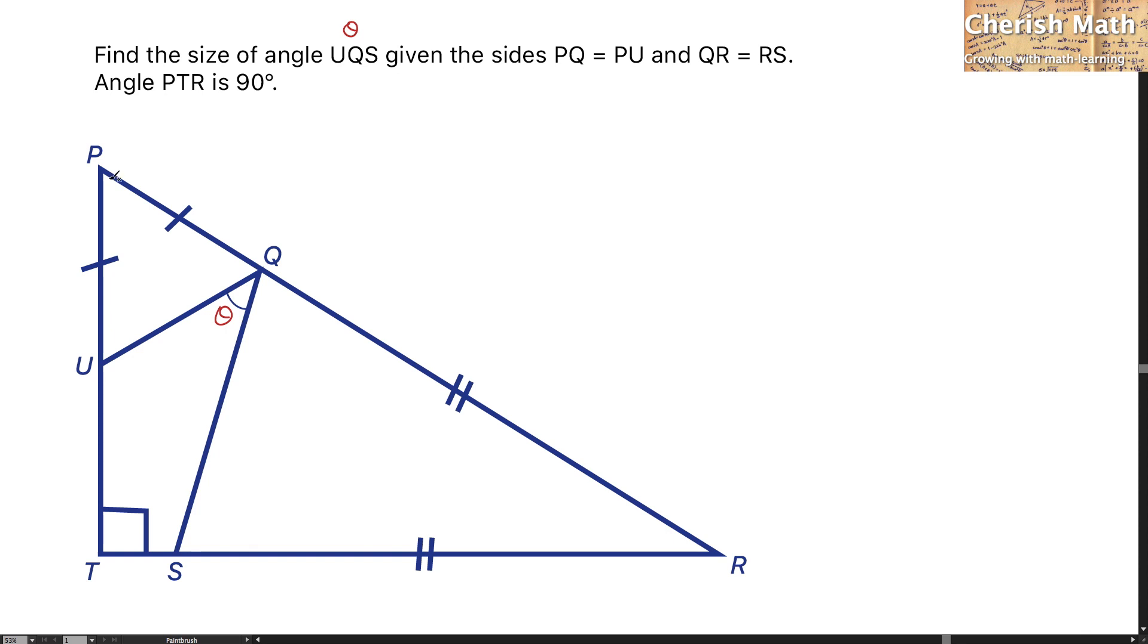Since triangle PQU is an isosceles triangle, for this part and this part are in fact the same type of angle that I'm going to label with A.